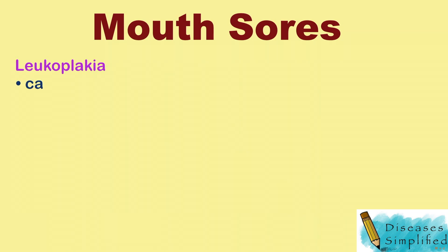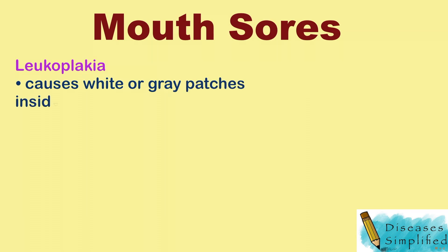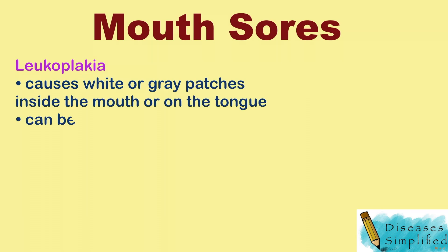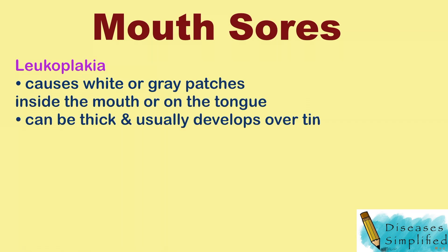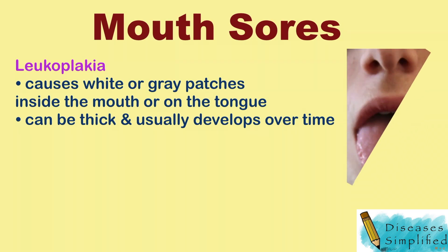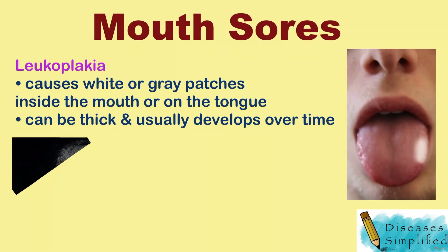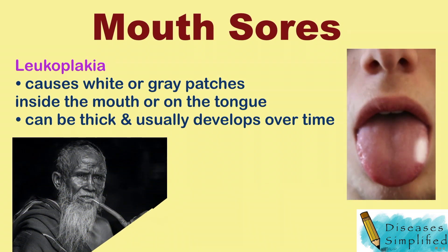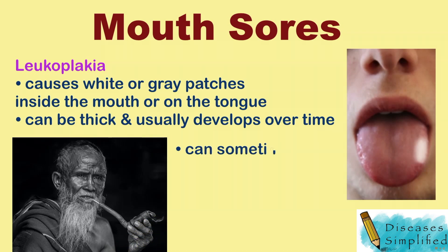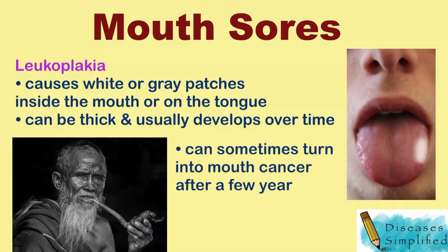Leukoplakia causes white or gray patches inside the mouth or on the tongue. These patches can be thick and usually develop over time. This can happen after something irritates the inside of the mouth, such as smoking or chewing tobacco. It can sometimes turn into mouth cancer after a few years.